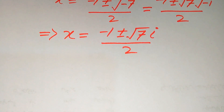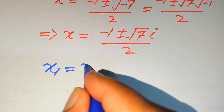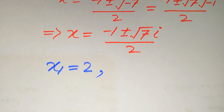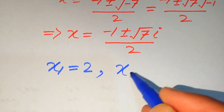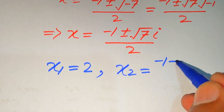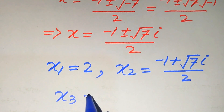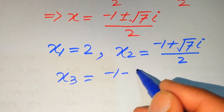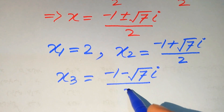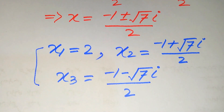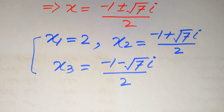Since the given equation is third order, it has three roots. The first real root is x₁ equals 2. The second root is x₂ equals (minus 1 plus square root of 7 · iota) divided by 2, and the third root is x₃ equals (minus 1 minus square root of 7 · iota) divided by 2. These are the three roots of the given equation, which is our final answer. Thank you for watching this video; please subscribe to my channel for more exciting videos.